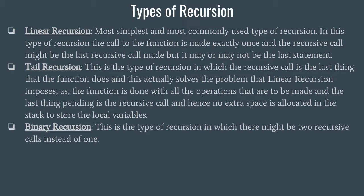Next is binary recursion. In linear and tail recursion there is only one recursive call, but in binary recursion there might be two recursive calls instead of one. A famous example of binary recursion is the Fibonacci sequence. An example of linear and tail recursion would be a factorial program — factorial can be done using linear recursion as well as tail recursion.